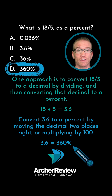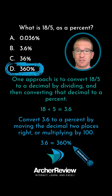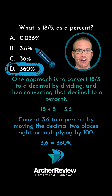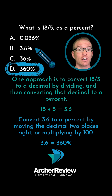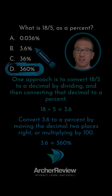Using either one of those techniques, 3.6 is equal to 360%. Very often this is a misconception because of the decimal to percent conversion. 3.6 is equal to 360%. I hope you found this helpful.